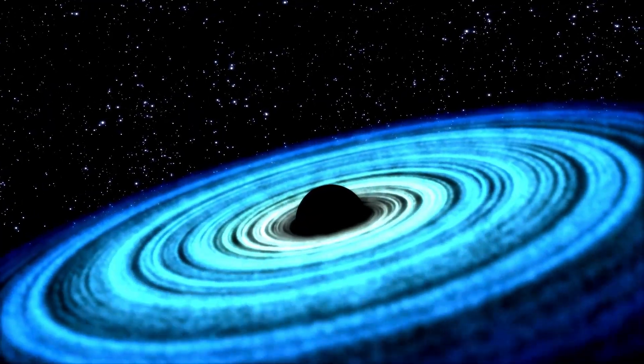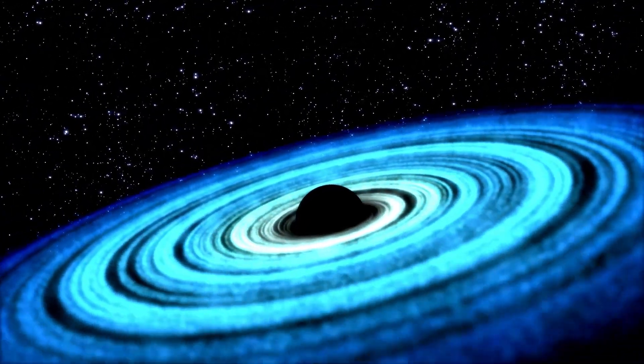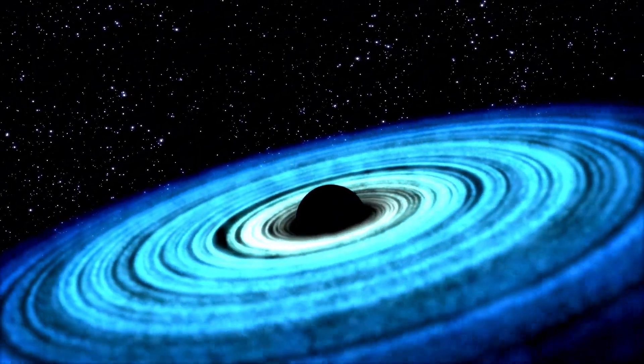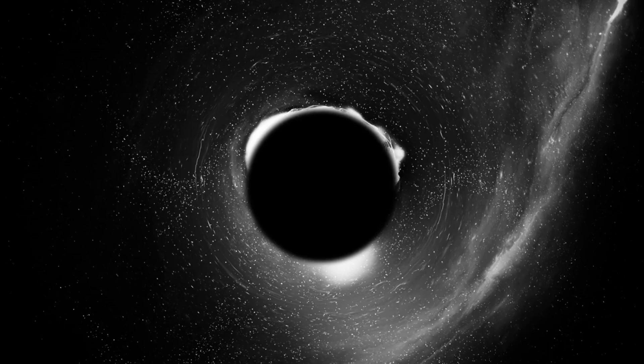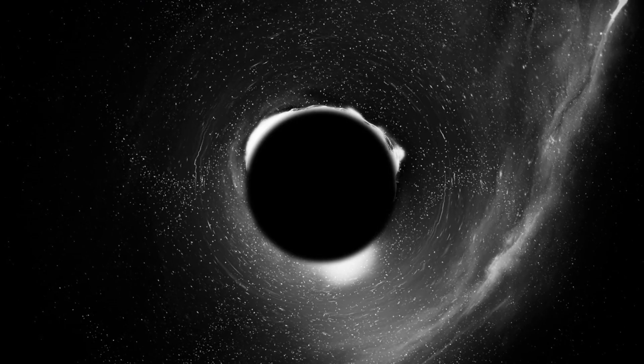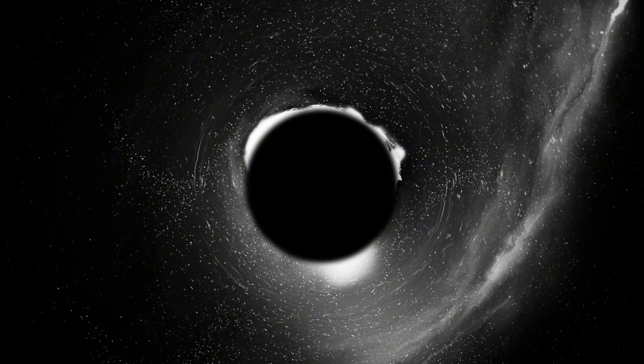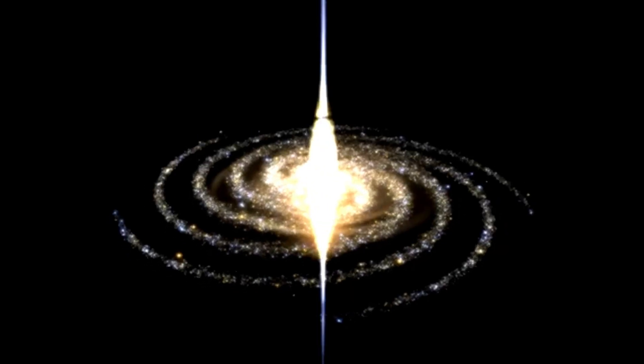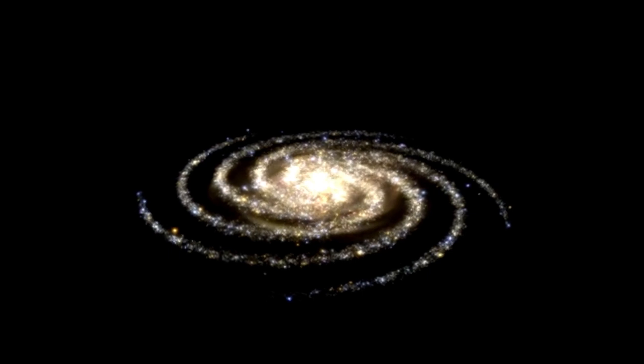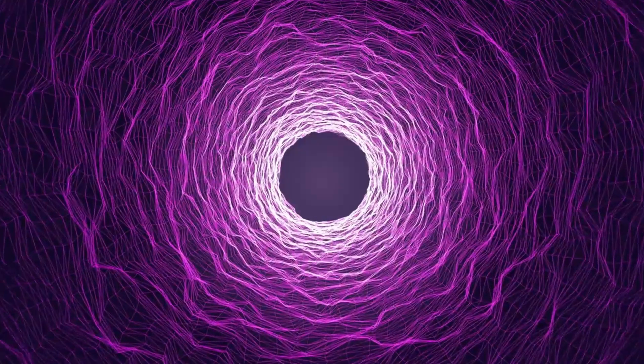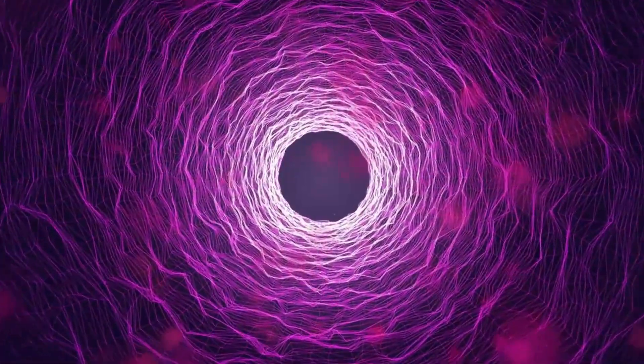Detecting black holes is no easy task since they don't emit any light. However, scientists have found ways to infer their presence by observing their effects on nearby matter. For example, if a black hole passes through a cloud of interstellar matter, it'll pull that matter towards it in a process called accretion. Additionally, when a normal star gets too close to a black hole, it can get torn apart, emitting x-rays as it does so.